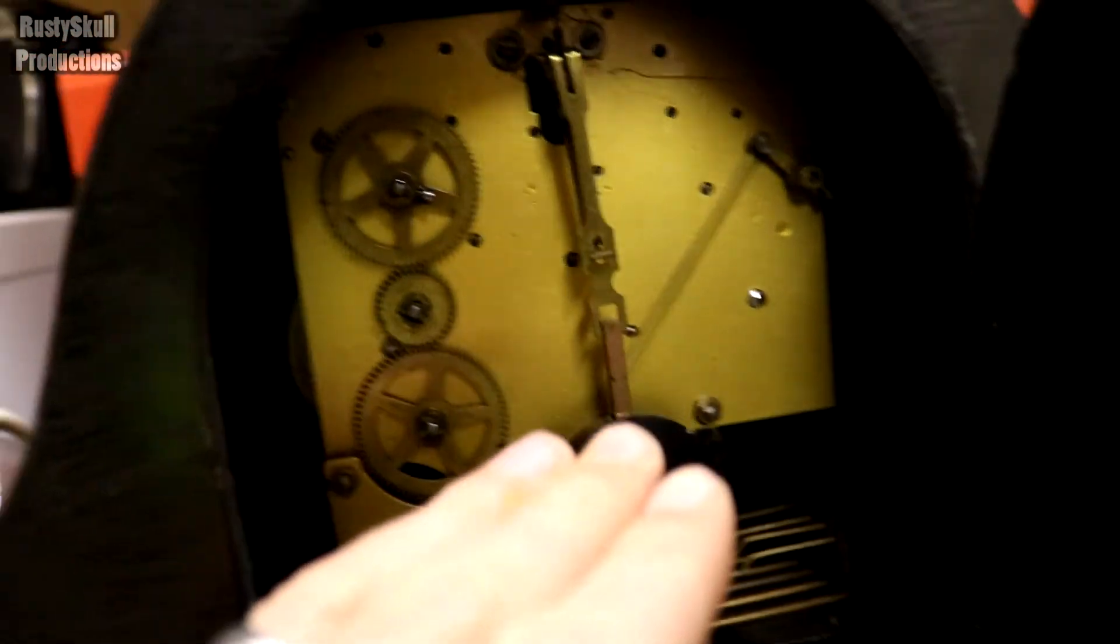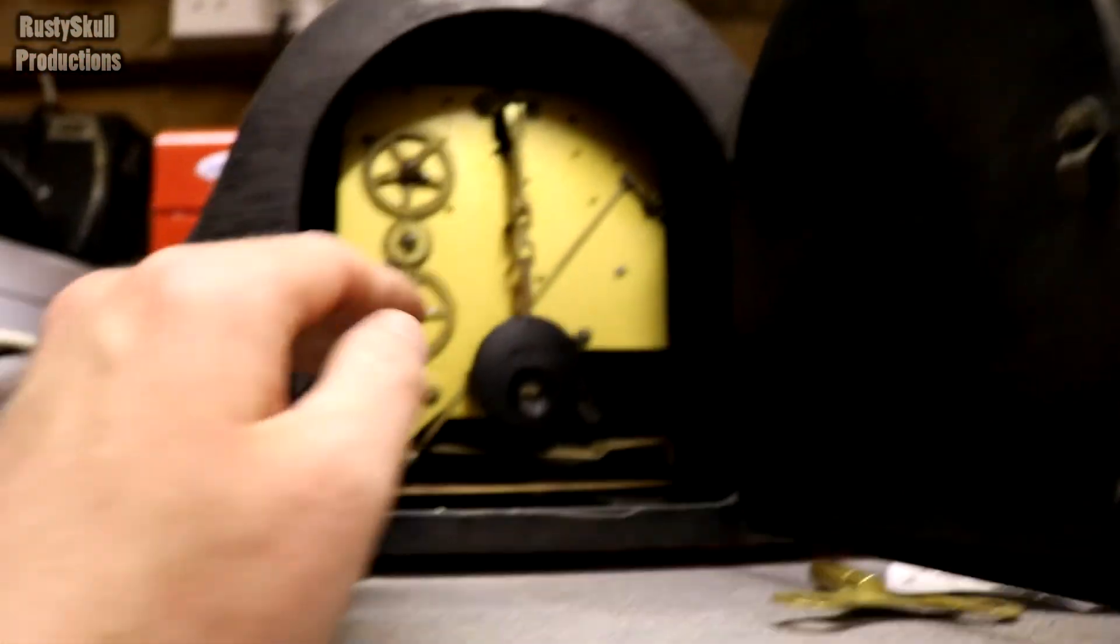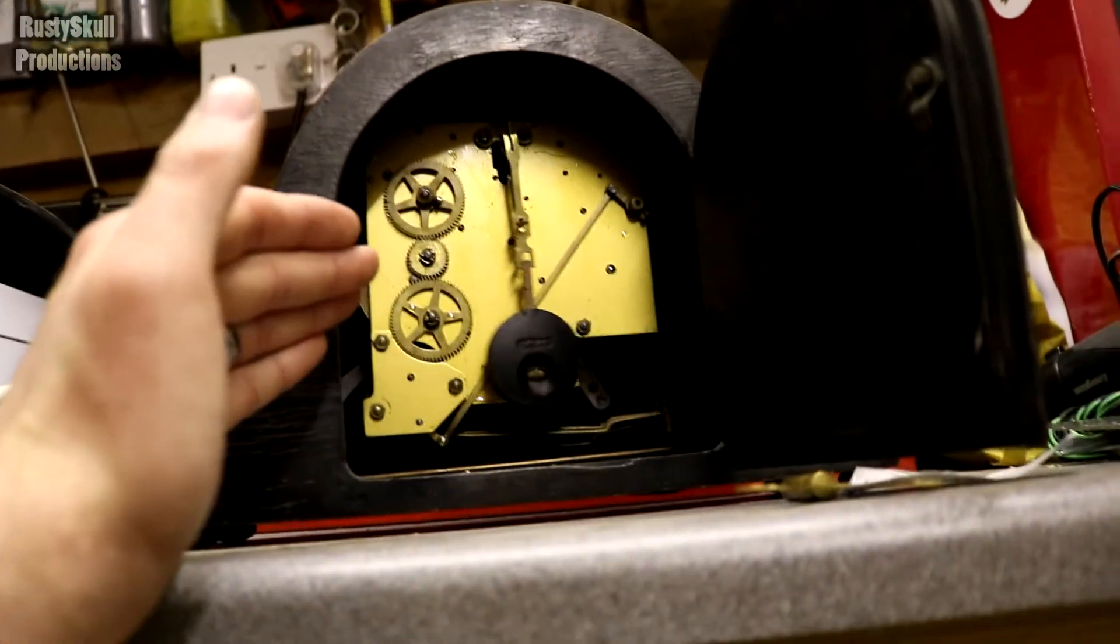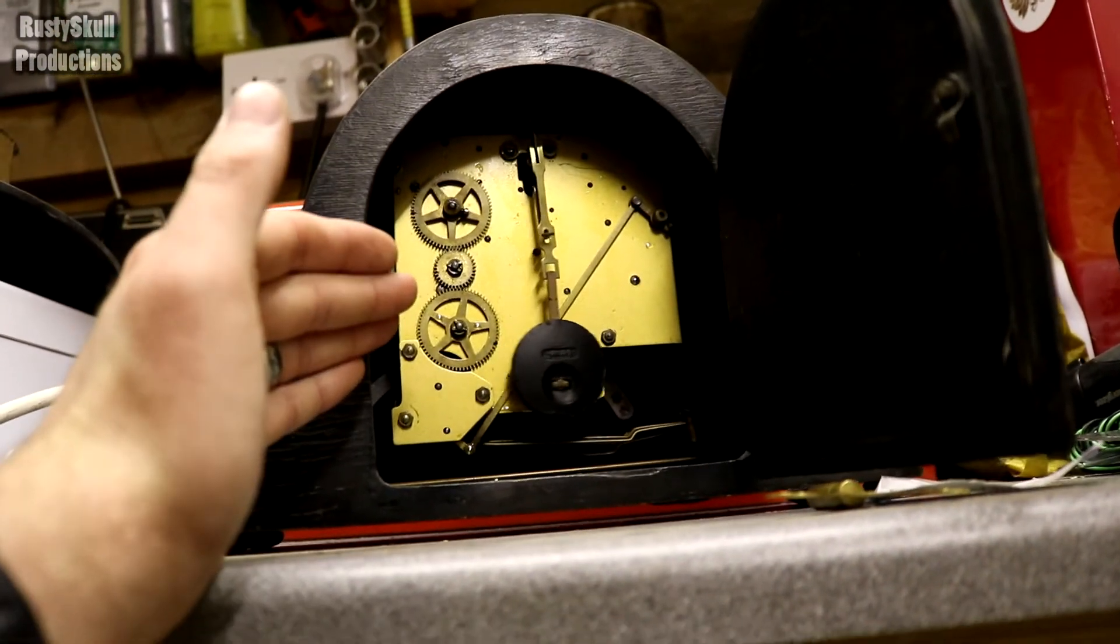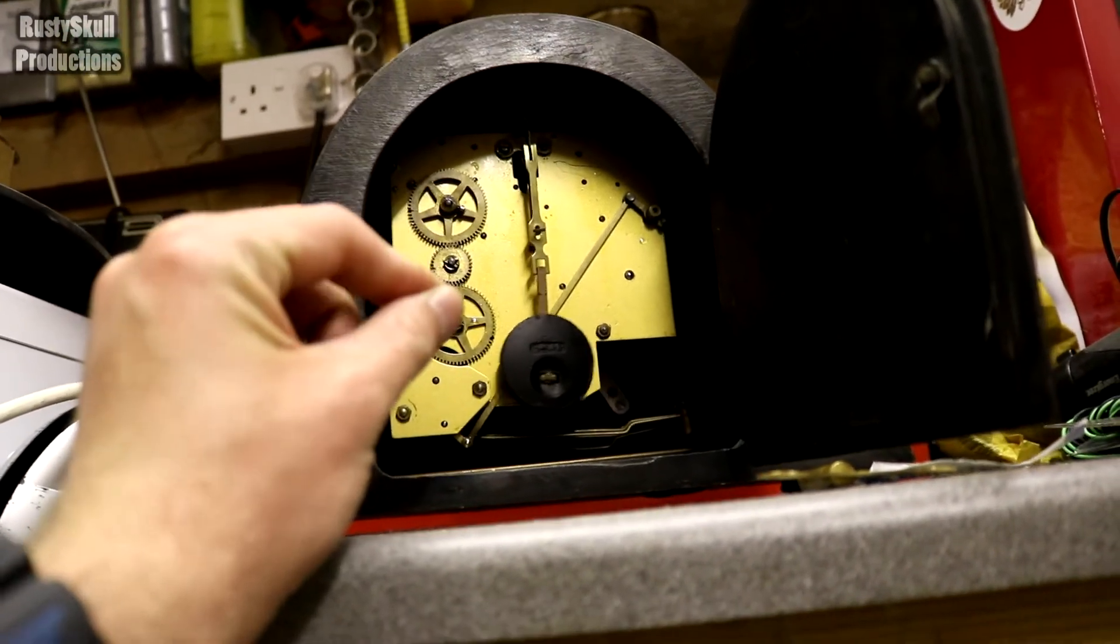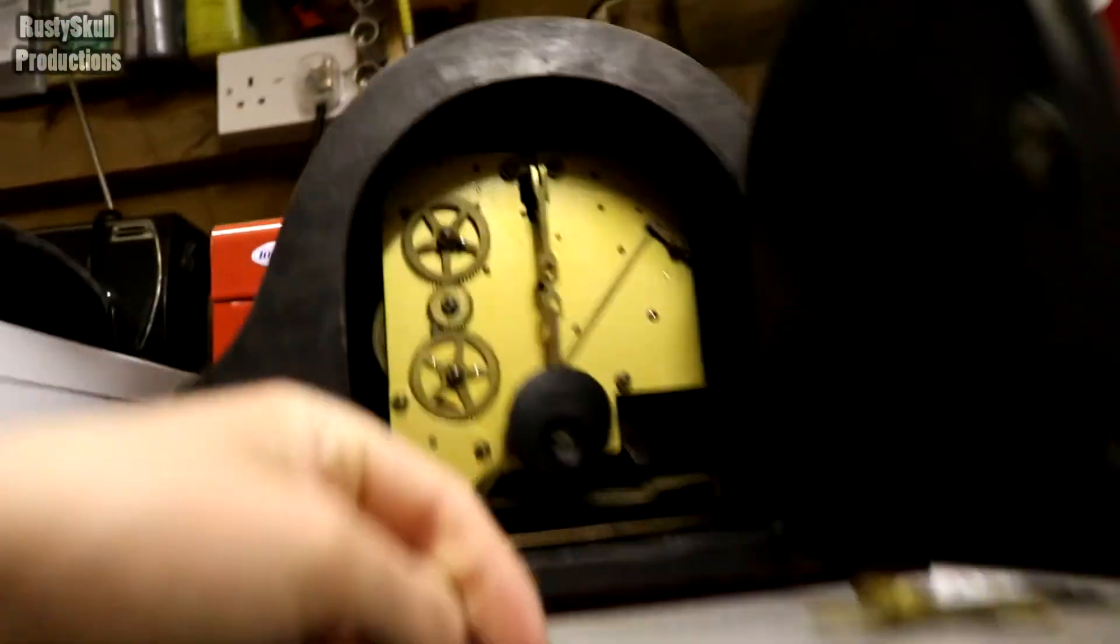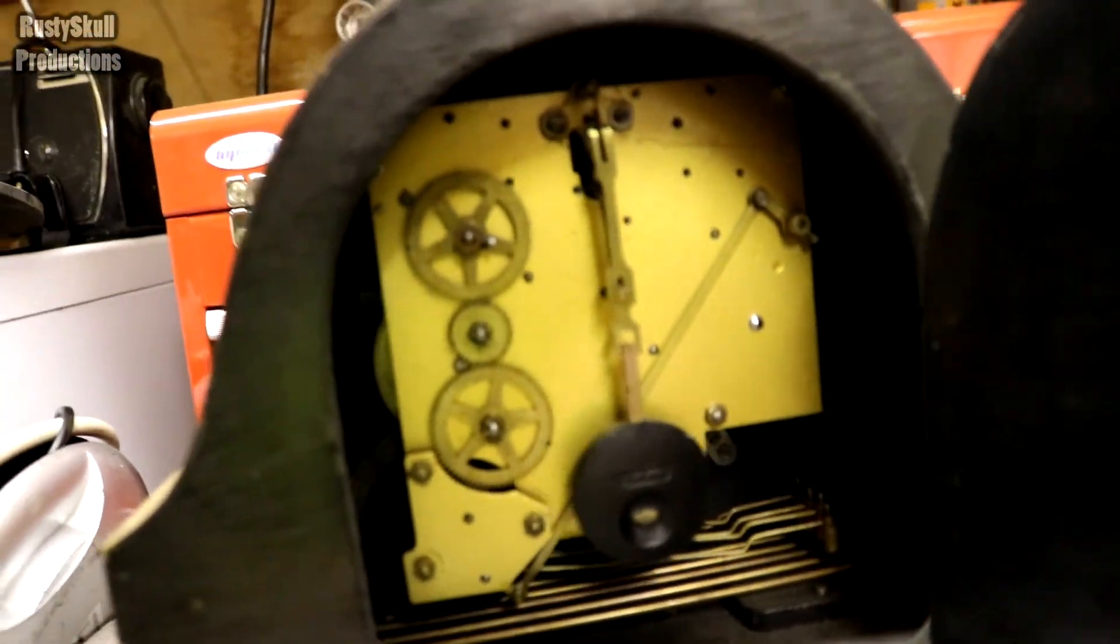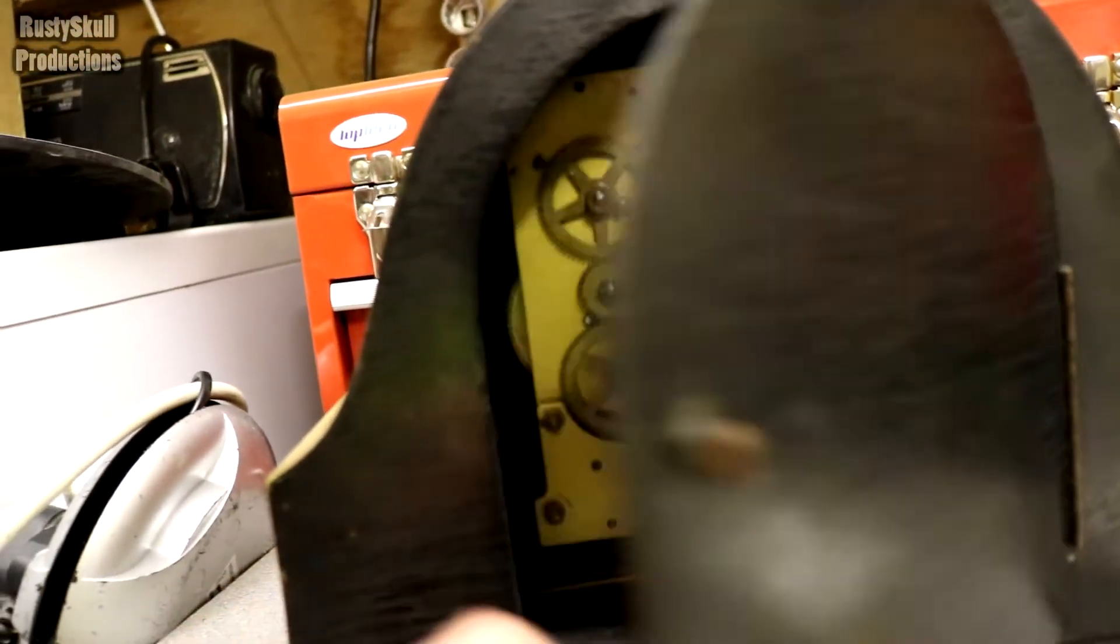But if it seems to be keeping time through a couple of days, and then you get say maybe two weeks down the line and you've noticed that you've gained five minutes or lost five minutes, then you'll only need to do about half a turn, maybe one turn in either direction. But it will take a couple of months. After a few months you will get it to be spot on, and you will be keeping time perfectly.